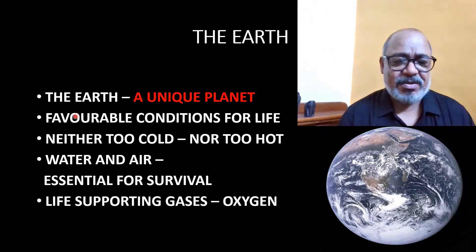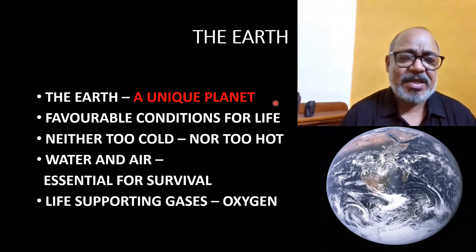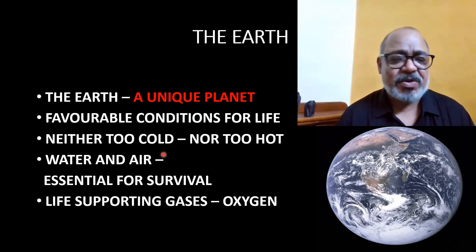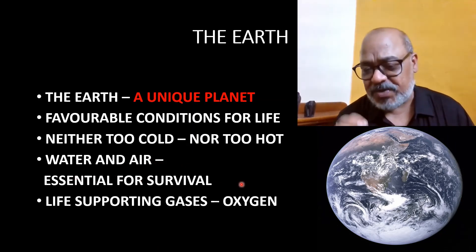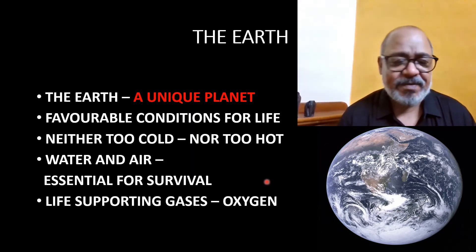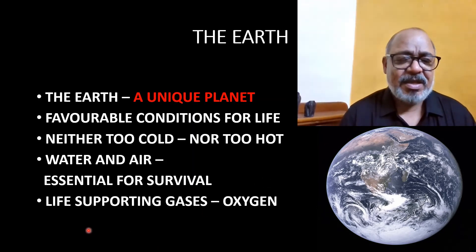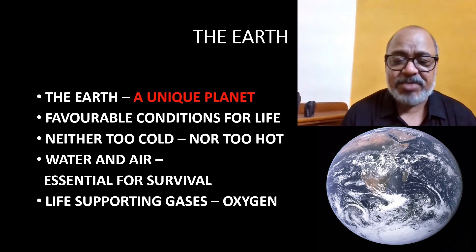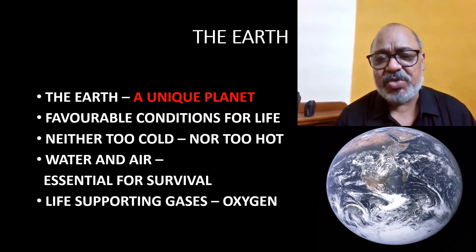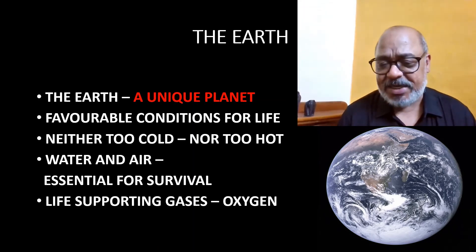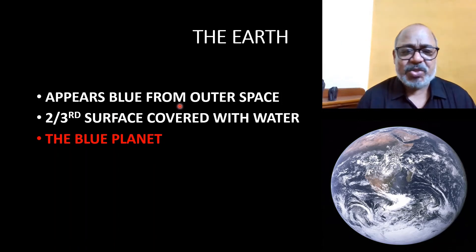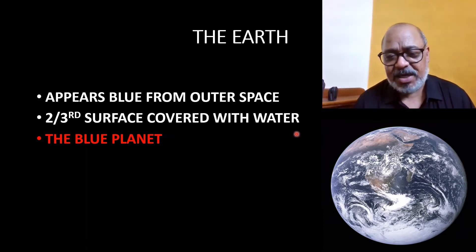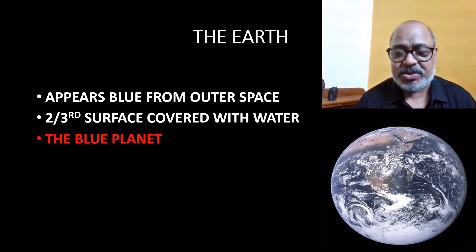Earth is a unique planet because only this planet has life. The conditions are favourable — neither too cold nor too hot. Water and air essential for survival are available here, and life-supporting gases like oxygen are available on Earth. That is why Earth is called a unique planet. So Earth has two nicknames: the blue planet and the unique planet. The Earth appears blue from outer space because two-thirds of its surface is covered with water.